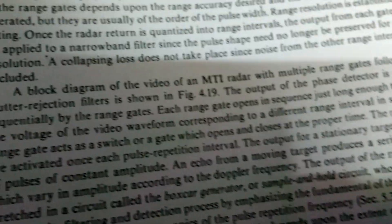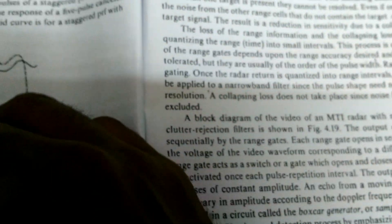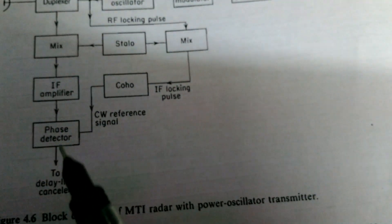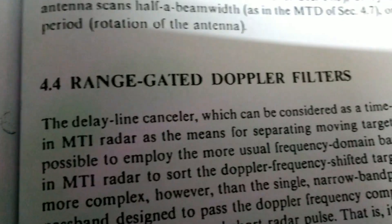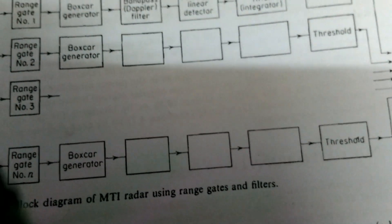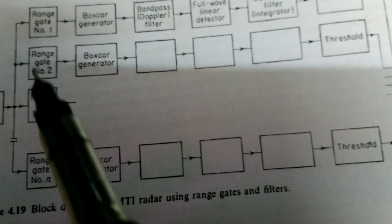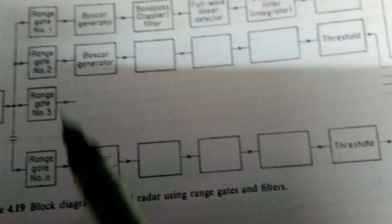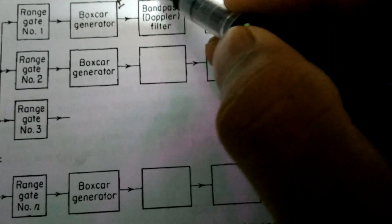A block diagram of an MTI radar with multiple range gates followed by clutter ejection filters is shown. After phase detection, instead of sending the output to a delay line canceller, it is sent to the range gated Doppler filter. The phase detector output is divided into ranges — range gate 1, 2, 3, and so on — followed by bandpass filters. The box car generator is a sample-and-hold circuit that passes this information.